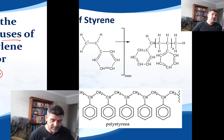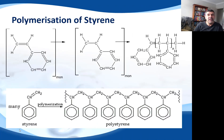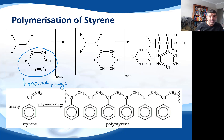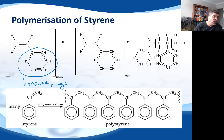When we're looking at the polymerization of styrene, we're looking at this big structure here. This is a benzene ring, part of a group of organic compounds known as aromatics, because of their strong smell. Benzene is also a potentially quite dangerous chemical, so we don't tend to play around too much with benzene compounds these days.